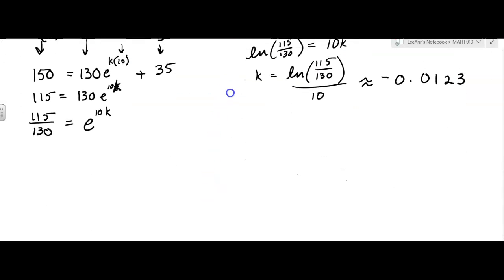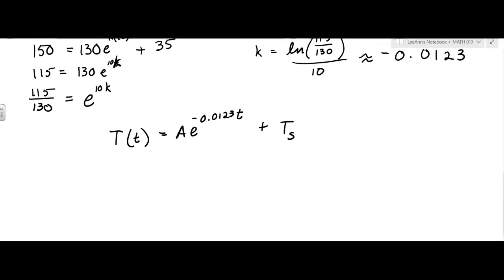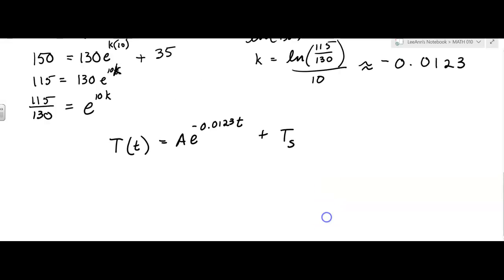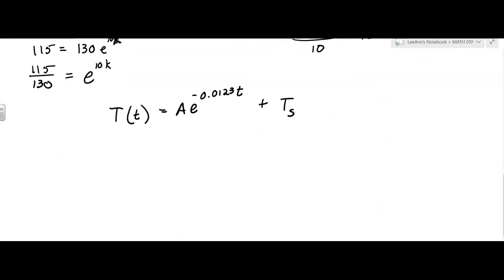So now we have a formula. We've got K. So T(t), the temperature based on time, equals A, that difference in temperatures, times e^(-0.0123t) plus the surrounding temperature. That's the formula we're going to use. If we must wait until the cheesecake is cooled to 70 before we can eat it, how long do we have to wait? We want the temperature to be 70 degrees. We already know A was 130, and we know T_S is 35.